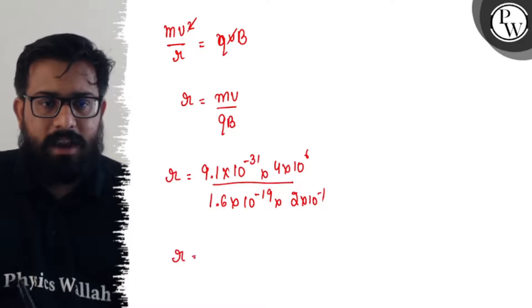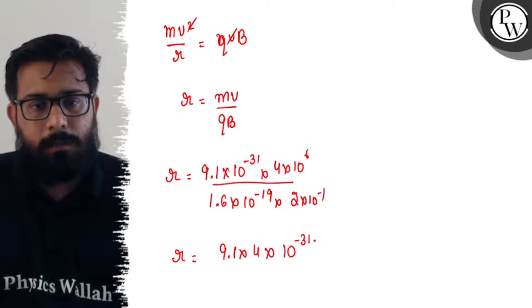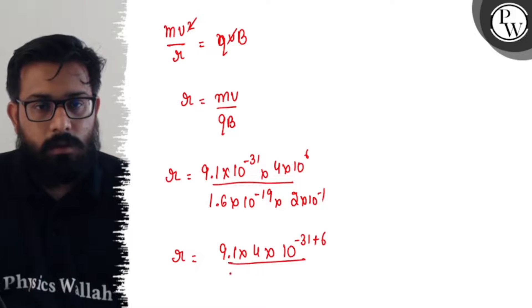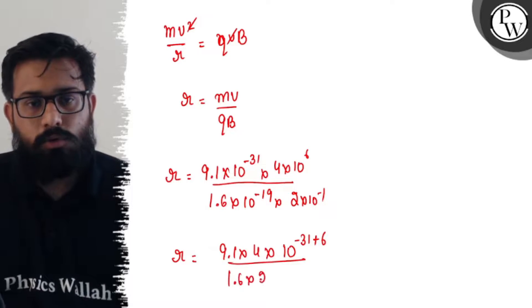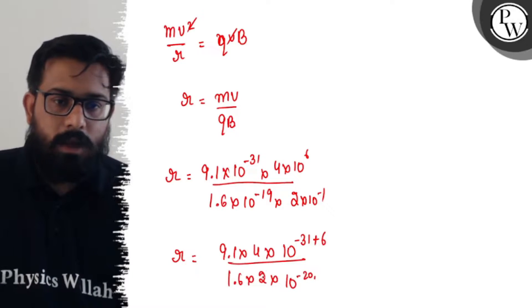Let's solve this. So r can be 9.1 × 4 × 10^-31+6 upon 1.6 × 2 × 10^-20. So here we can cancel out.